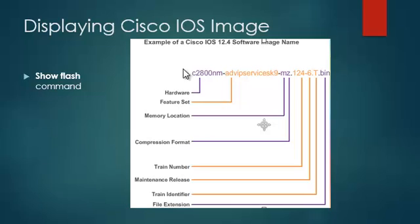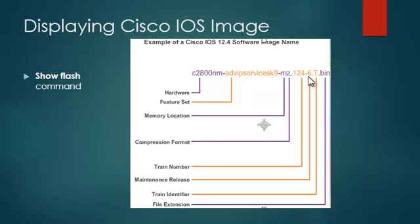Now we are going to look at the image name. The first part identifies the platform on which the image runs — in this example, the platform is a Cisco 2800 router with a network module. The next part, 'advipservicesk9', specifies the feature set — in this example it refers to the advanced IP services feature set, which includes both the advanced security and service provider packages along with IPv6. The 'mz' portion indicates where the image runs and whether the file is compressed — here it means the file runs from RAM and is compressed. The '12.4.6T' indicates the train number, maintenance release number, and train identifier.